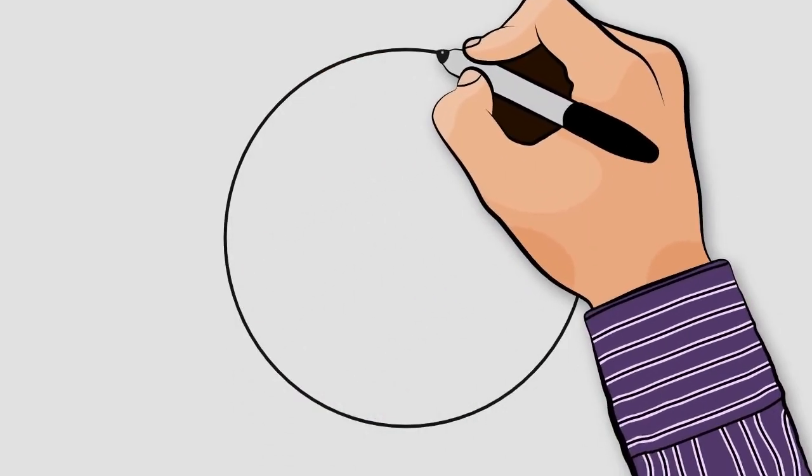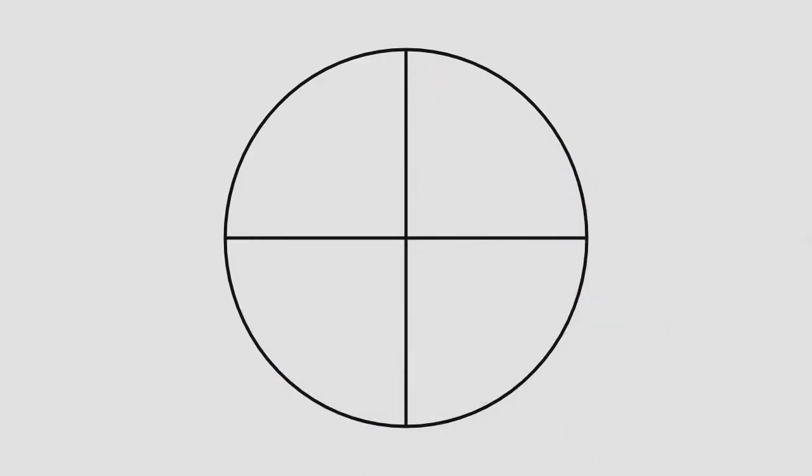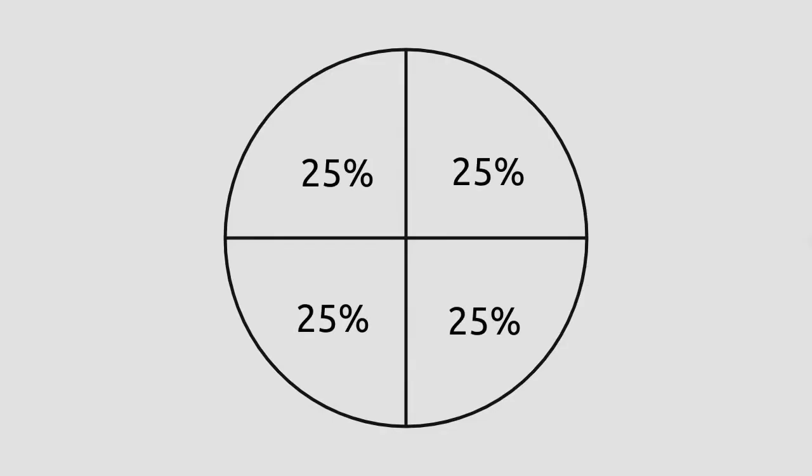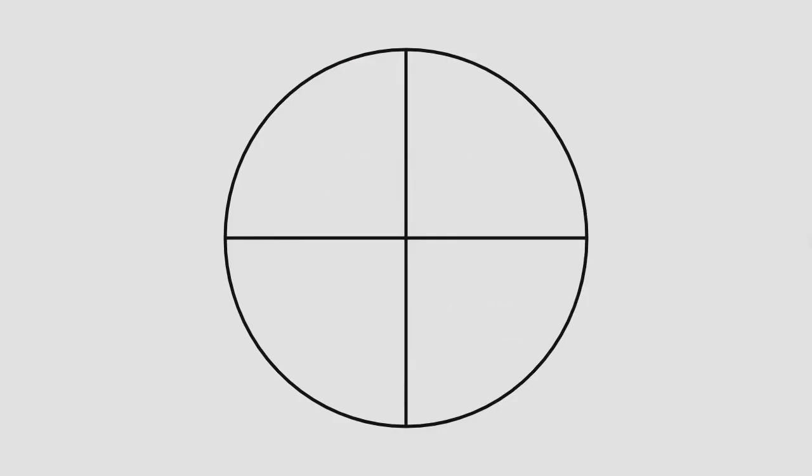Let's try another example. Suppose a friend of yours asks you to paint 25% of the following circle yellow. How would you do it? You know that this entire circle represents 100%. What you can do is divide the circle into 4 equal parts. Each part represents 25%, because 100% divided by 4 equal parts gives us 25% for each part. Now, if you want to paint 25% of your friend's circle yellow, you only have to paint 1 part yellow.